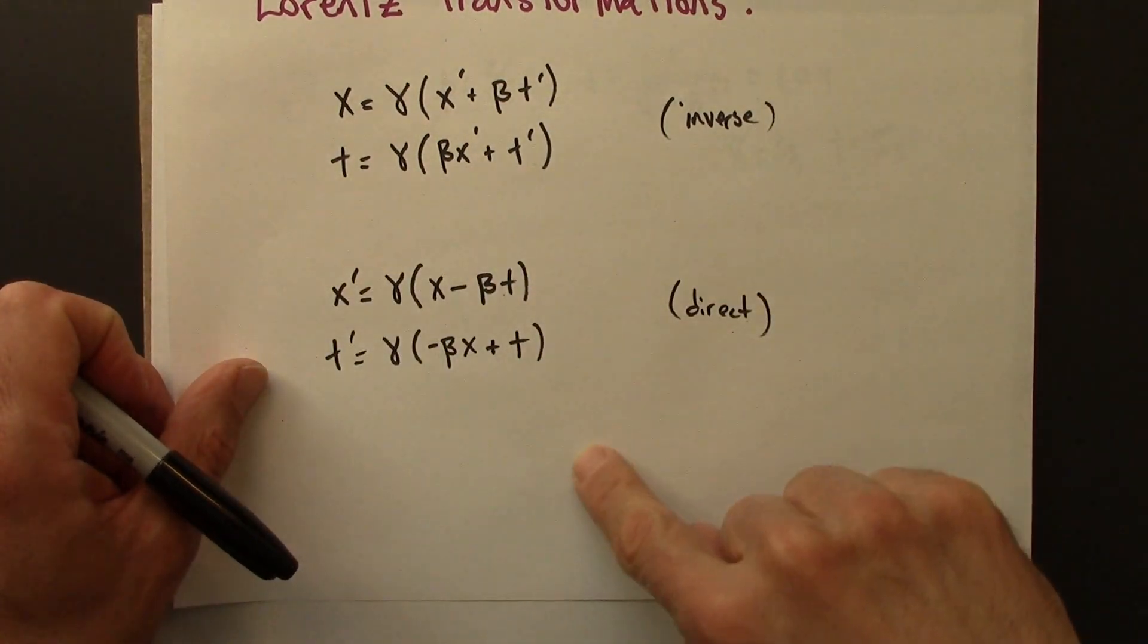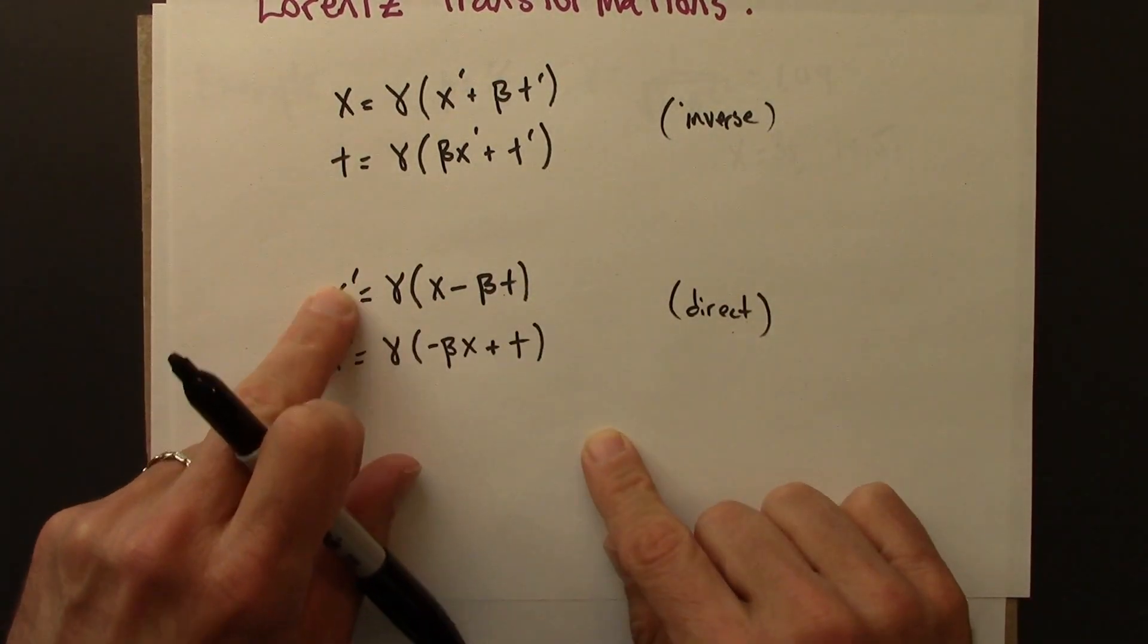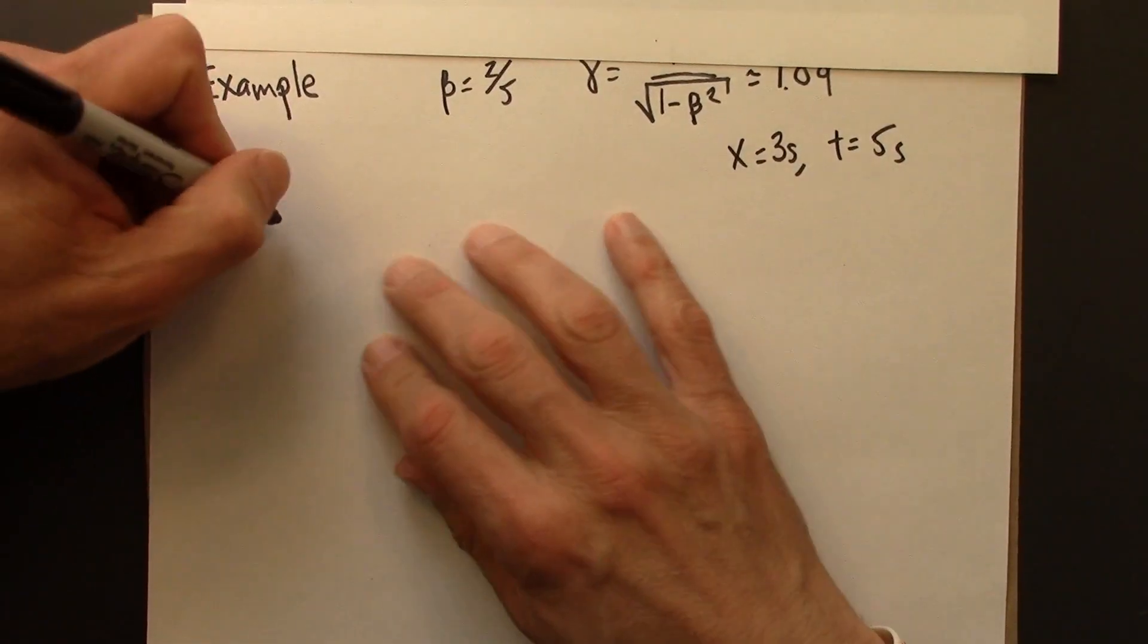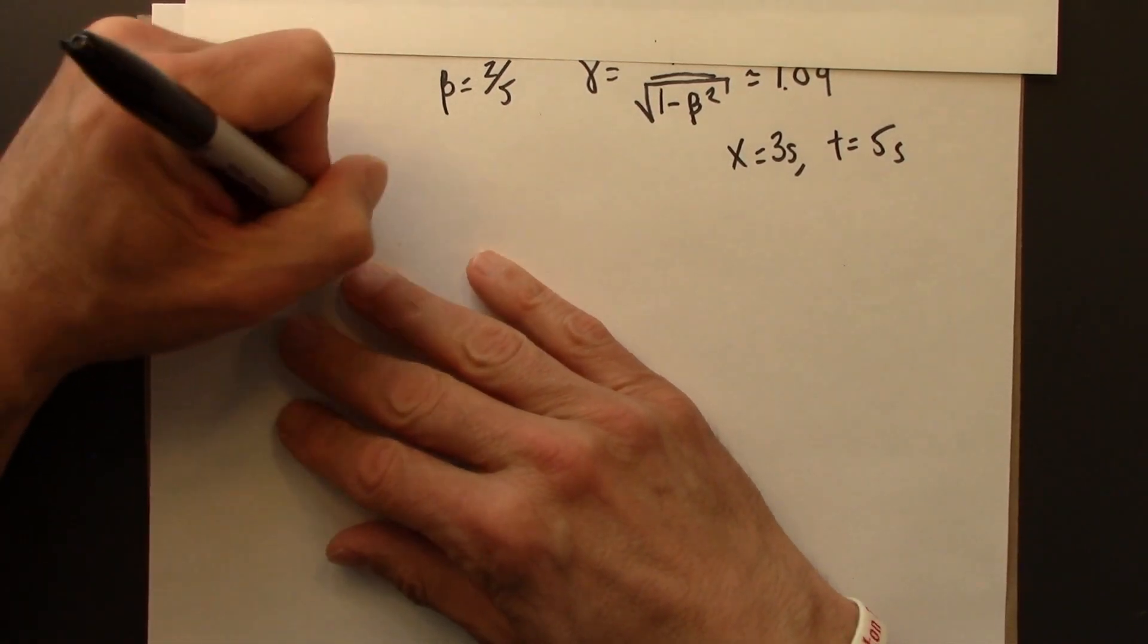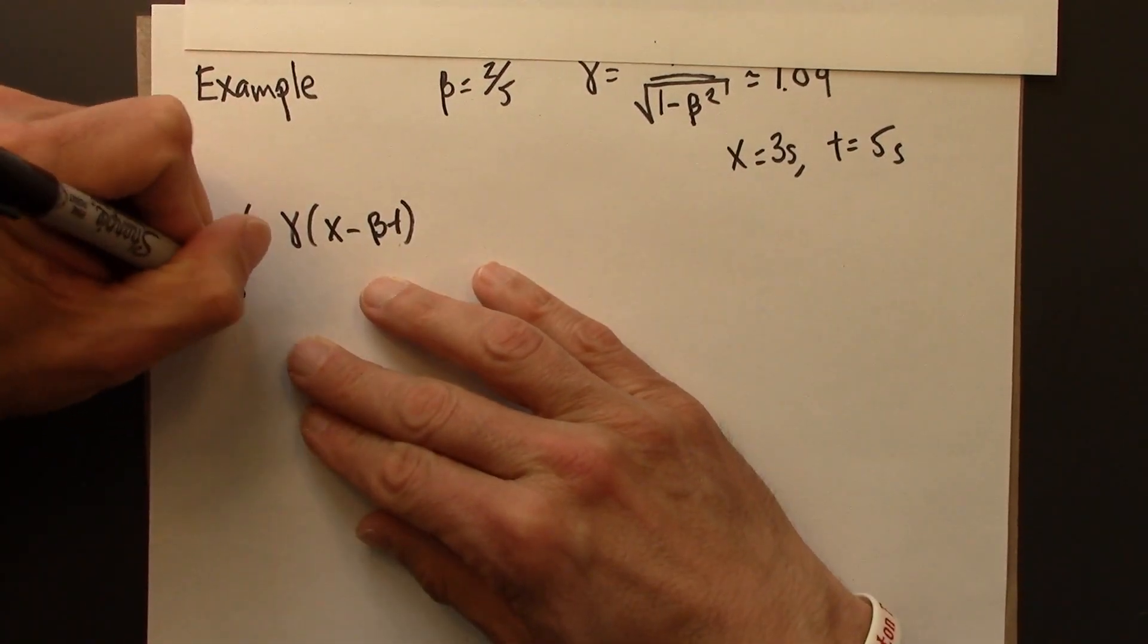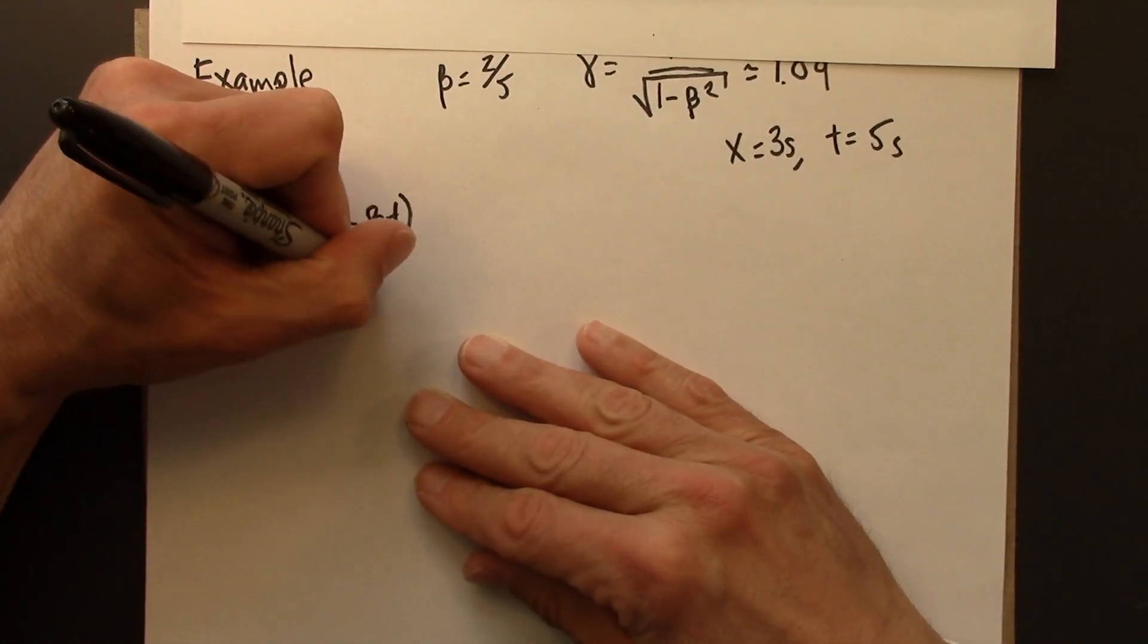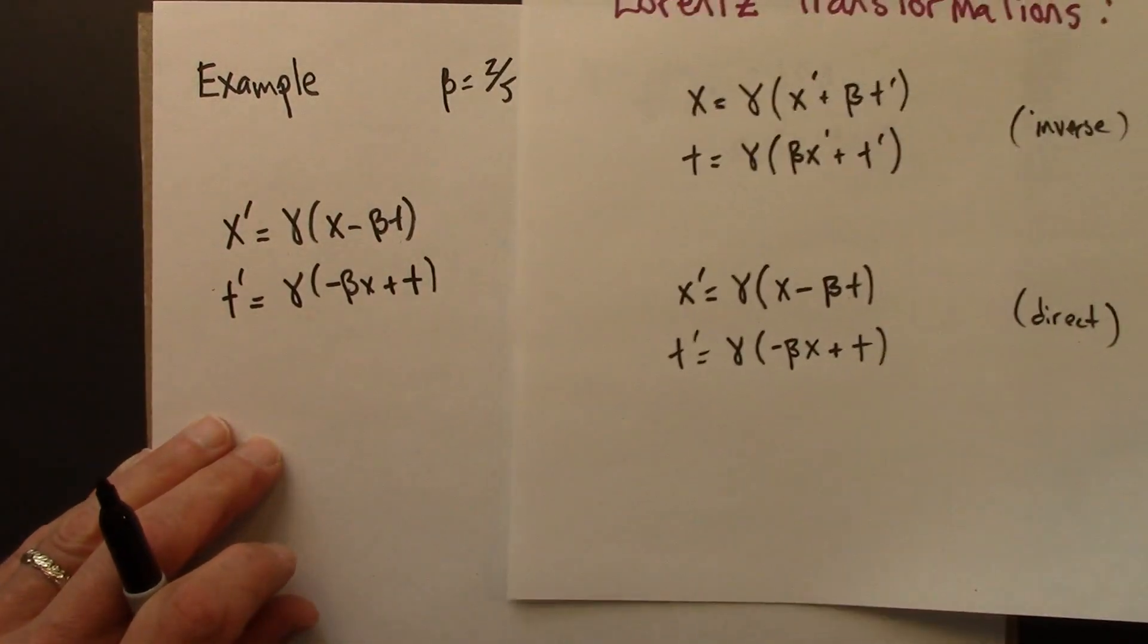So we know the t and x coordinates in the unprimed frame, and we want to use the Lorentz transformations to figure out the primed values. So I'm going to use this form of the equations, because I know x and t and I want to figure out x prime and t prime. I'm going to just copy over the Lorentz transformations first. x prime is gamma times x minus beta t, t prime is gamma times minus beta x plus t.